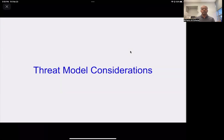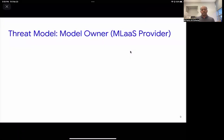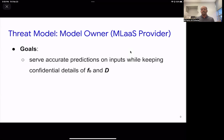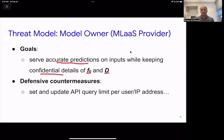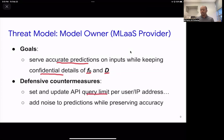Like any other attack, we need to discuss threat model considerations for model extraction attacks. The goal of the machine learning as a service provider is to serve accurate predictions while keeping model details and the dataset confidential. To ensure this, the provider could set a query limit per user or per IP address, and could add noise to the predictions while maintaining the precision expected of the service, since quality of service matters when charging users per query.